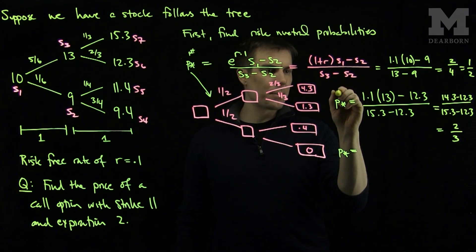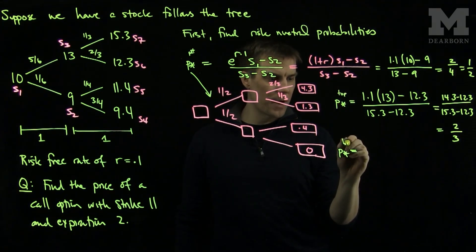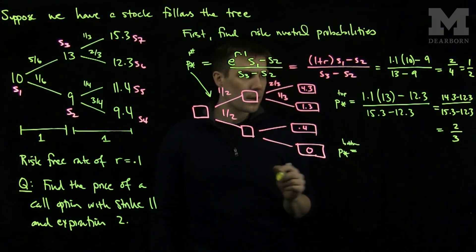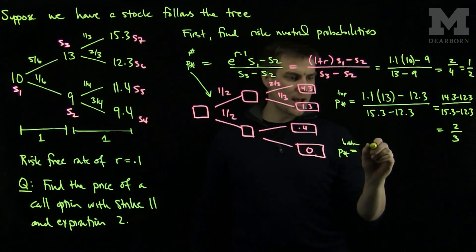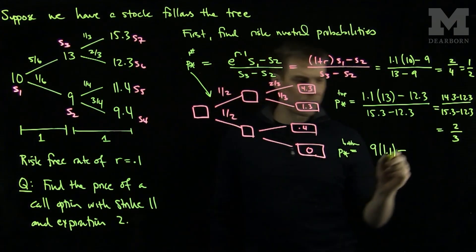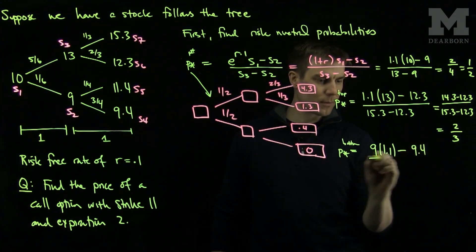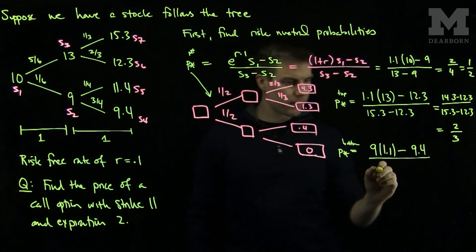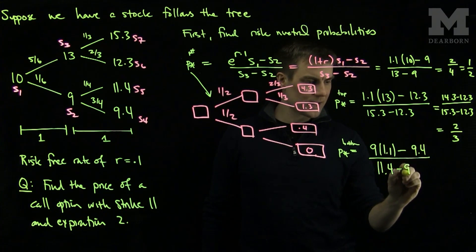This will be for the top step. And this will be for the bottom step. It will be the stock price 9 times 1.1 minus the lower value 9.4 divided by 11.4 minus 9.4.